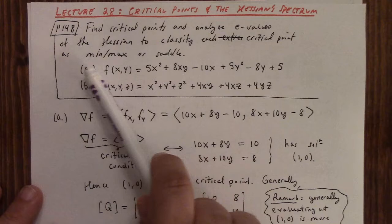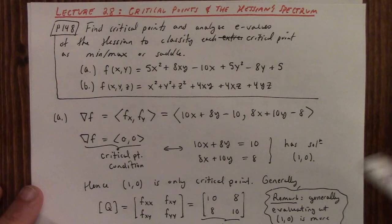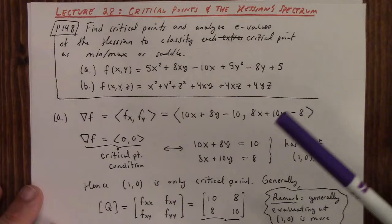each critical point as a minimum, maximum, or saddle. So here's the function, and here's a function of three variables. Part A: calculate the gradient and we figure out that the critical point (1,0) is the only critical point.